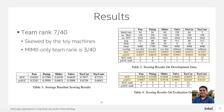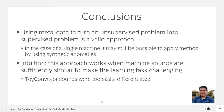One of the key things we learned during this challenge is that using metadata to turn an unsupervised problem into a supervised problem is a valid approach. We saw many of the top teams use a machine ID classifier in their solution. We do not think this is limiting, because in the case you have a single machine, it may still be possible to apply the method using synthetic anomalies. Our intuition is that this approach works when the machine sounds are sufficiently similar to make the learning task challenging. In the case of toy conveyor, this was not the case — the different machine sounds were easily differentiated, even though they were part of the same machine type.